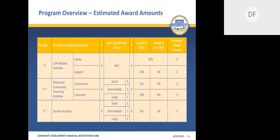This chart provides a visual display of the priority factors and formulas in making an award decision based on the applicant's increase in qualified activities, their CDFI certification status, and their CRA asset size. For Fiscal Year 2020, the BEA program revised the CRA asset size thresholds. To be classified as a small institution, the applicant's assets as of 12-31-2019 must be less than $226 million. For intermediate small institutions, the asset size must be at least $226 million but less than $1.305 billion. For large institutions, the assets must be $1.305 billion or greater as of 12-31-2019.